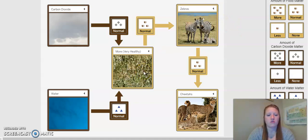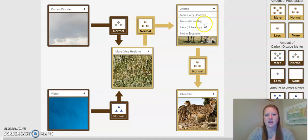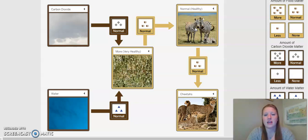So if there's more plant and it's very healthy and a normal amount of food matter is going into the zebras, I think they would be normal and healthy. With the amount of food matter being normal and healthy for the zebras, that would make the cheetahs normal and healthy, which would make the amount of water normal and healthy and the amount of carbon dioxide normal and healthy.